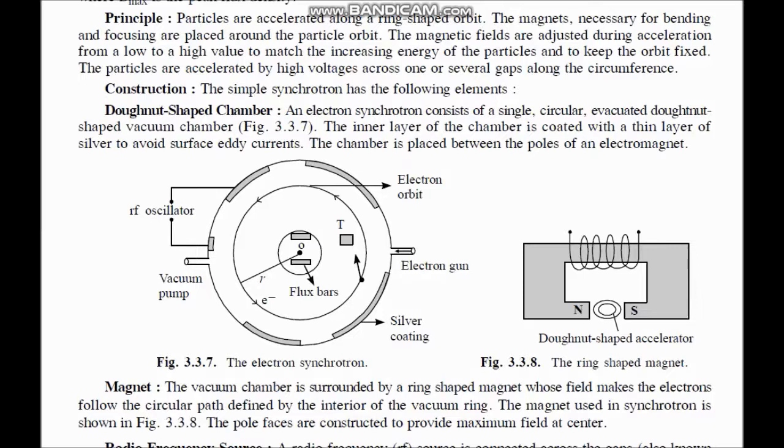The construction part consists of this donut shaped chamber, which is kept between the pole pieces of the magnet, ring shaped magnet. The pole pieces are designed in such a way that we get maximum field at the center and lower field at the sides. This is used to apply magnetic field to this orbit. The internal inner part of this donut shaped chamber is silver coated.